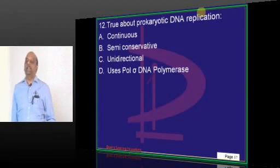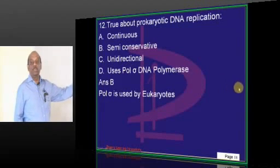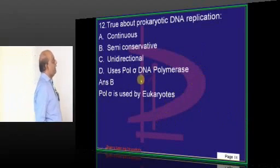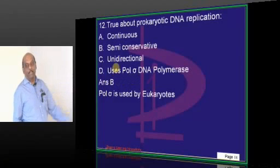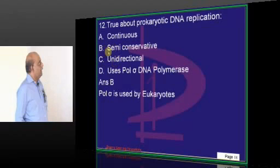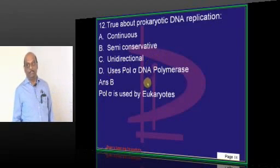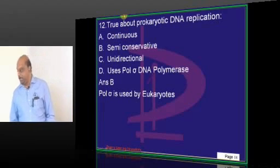All the listed polymerases are prokaryotic DNA polymerases, but Pol sigma is used purely by eukaryotes to repair DNA — that is what you have to basically remember. The remaining statements are all true: replication is not unidirectional, it is bidirectional; there is a replicative fork; semi-conservative replication is true. It is not continuous but semi-continuous, so D is the correct answer.